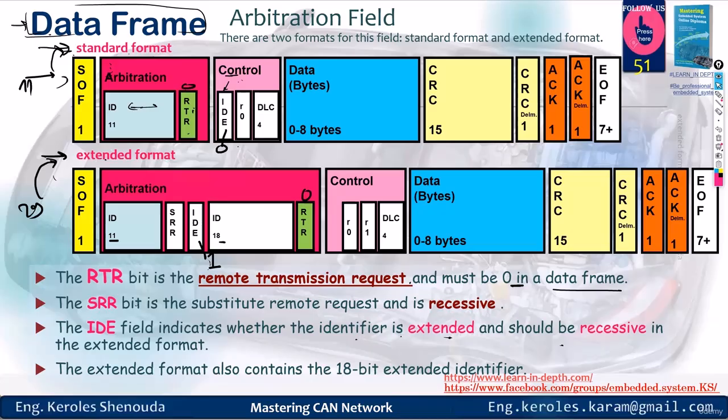Next up is the control field. It contains the IDE which indicates whether the identifier is standard or extended. If you're using the standard format, IDE is set to 0. But for the extended format, it's set to 1. Now, you might ask, how do we differentiate between the standard and extended formats? Both have start of frame, RTR and ID. Here's the kicker. In the extended format, something called the SRR is included, which stands for Substitute Remote Request. This is set as recessive, meaning 1. It's placed adjacent to the identifier, followed by setting the IDE to 1.